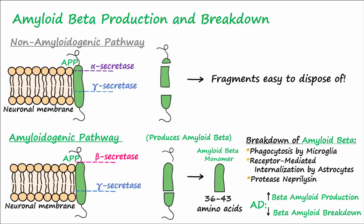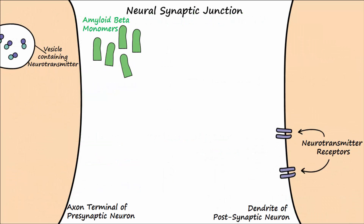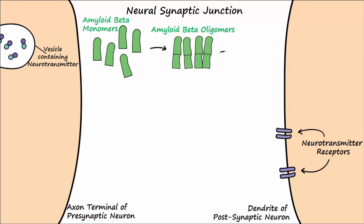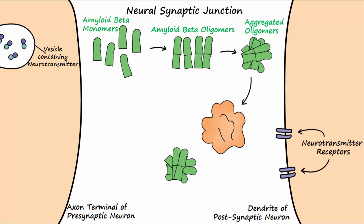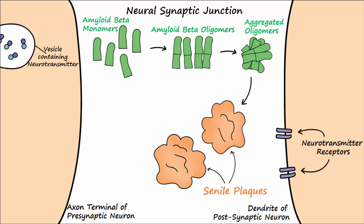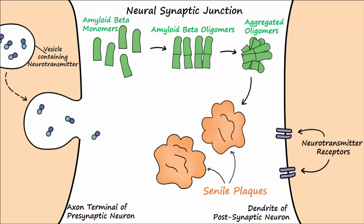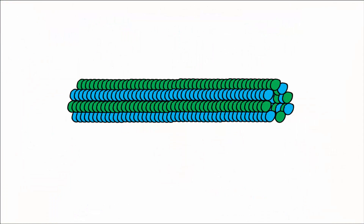In the neural synaptic junction, excess amyloid beta monomers aggregate into oligomers, which then aggregate to ultimately form the characteristic plaques of Alzheimer's disease. The plaques can block neurotransmitters in the synapse, thus blocking neural communication.